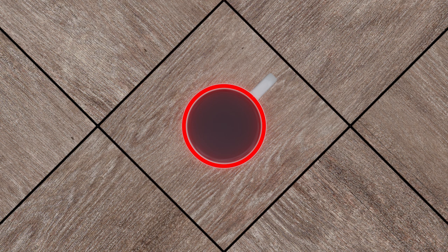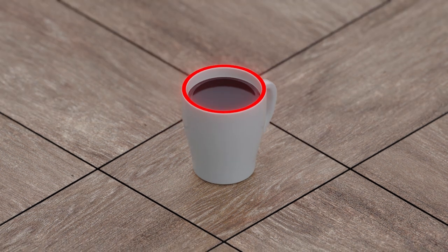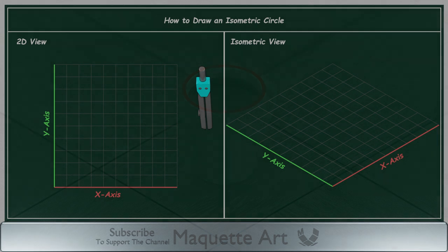But please keep in mind that there is a difference between human eye view or perspective view and isometric view. I will explain this more in another video. Now the question is how we can draw this ellipse. It is very simple and I will show you how.